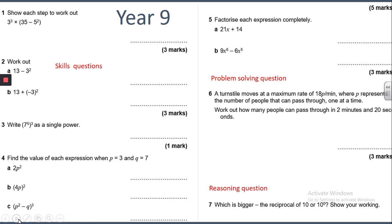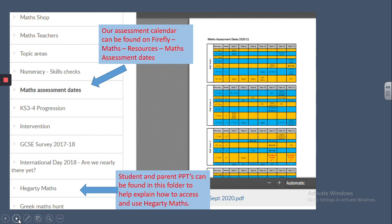Another issue we sometimes find is that students often forget to let you know about when they have their assessments. The next thing I've included is a screenshot from Firefly, where we have saved the PDF showing all of the maths assessment deadlines and dates. If you go into Firefly, go into Maths Resources and then go down to Maths Assessment Dates, you can download the PDF to see exactly when the assessments are.